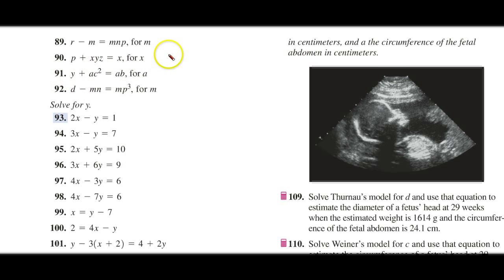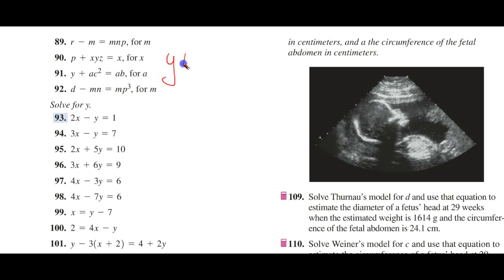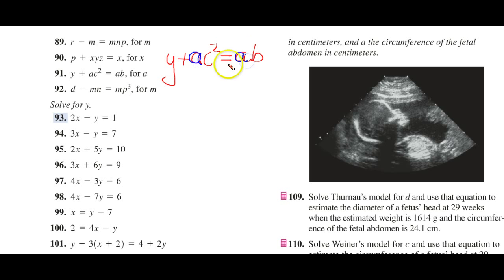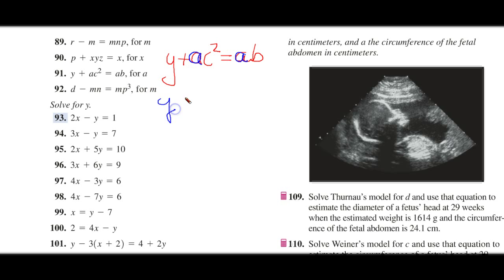Let's do 91. Which is Y plus AC squared equals AB. And we want to solve for A. Now, once again, A is in two terms.